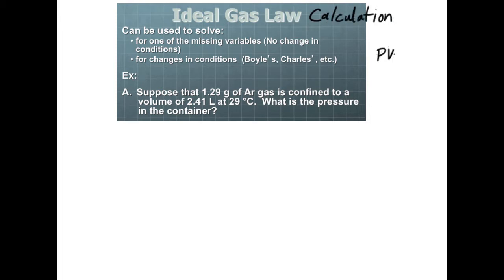The ideal gas law is PV equals NRT, and you're going to hear me talking about this equation quite a bit because it is very useful. It can be used to solve for one of the missing variables where there is no change in conditions. Think about what we've been doing with Boyle's law or Charles law—we start with pressure and volume, then change something to see what happens. Here we're looking at no change, just listing what the conditions are.